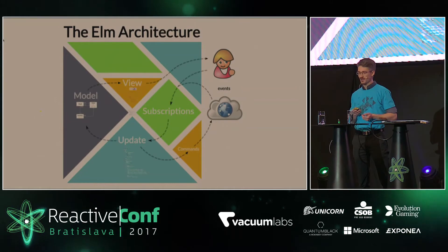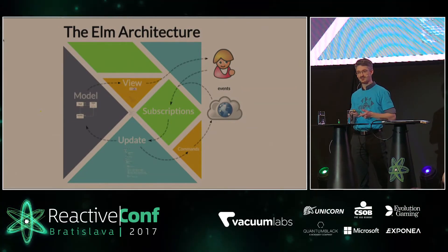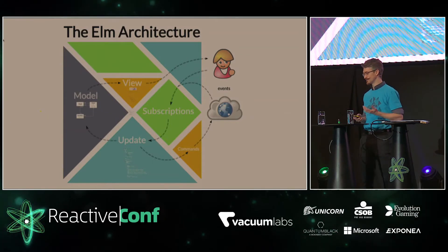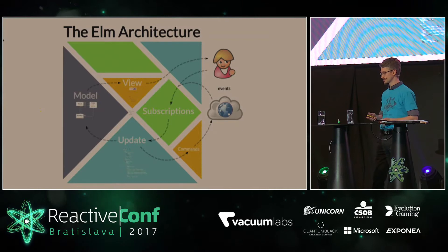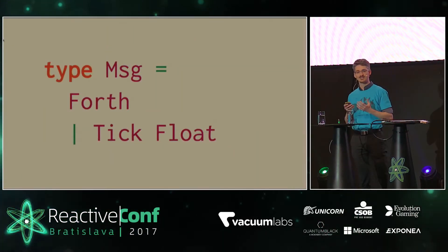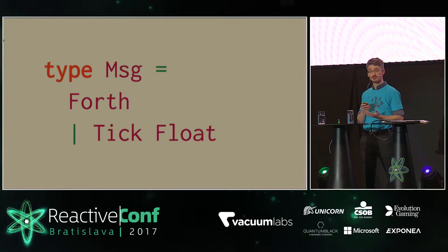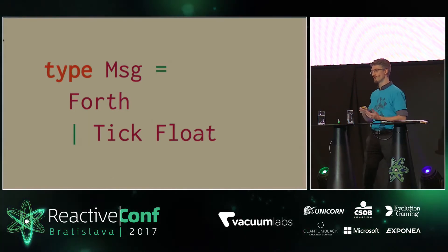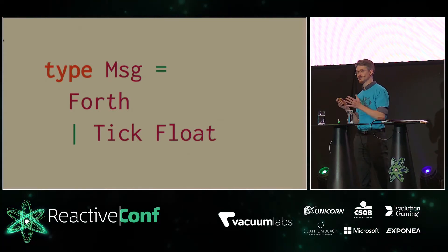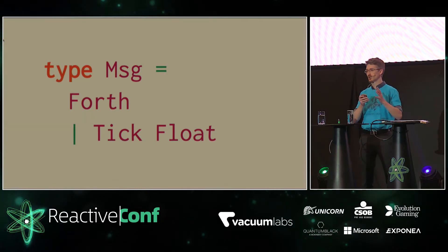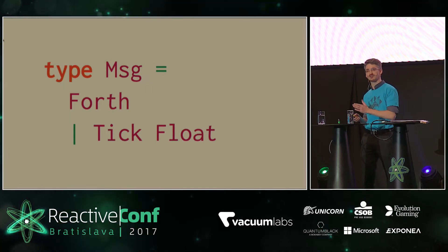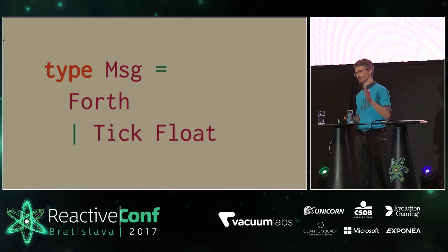Now for the most important part of this presentation: how do we make it move? How do we make it reactive? That goes through subscriptions. First we need to define what kind of messages we expect in our application. Here we expect Forth — this is when the user wants to move forward in the presentation — and Tick, which we need when we animate the transition, when we move from one frame to the other. Float here is the time delta between two animation frames of the browser.